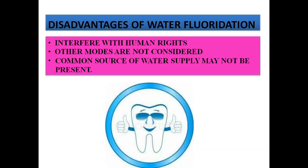On the other hand, water fluoridation has disadvantages including ethical issues: once community water is fluoridated, all residents are bound to drink it with no choice of rejection, violating human rights. Additionally, a centralized water supply system is required; without one, this approach is not possible.